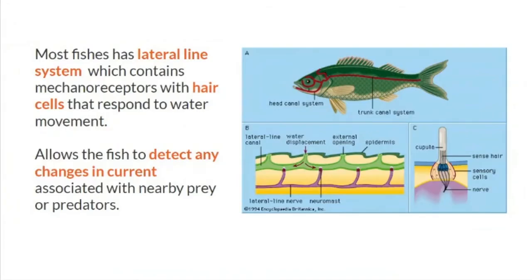Most fish have a lateral line system which contains mechanoreceptors with hair cells that respond to water movement. This allows fish to detect changes in current associated with nearby prey or predators. These mechanoreceptors also help in survival — when fish detect predators, they can avoid them earlier.